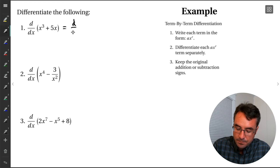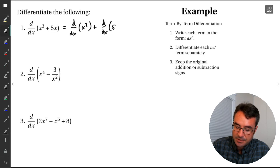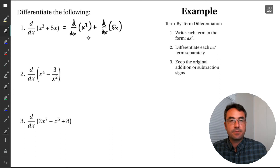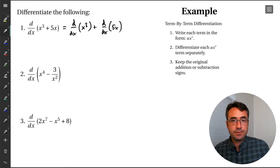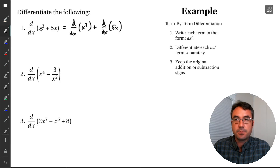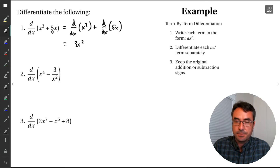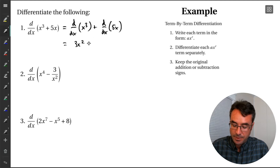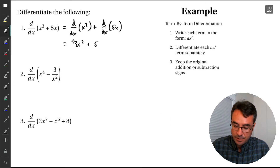For example, differentiate x cubed plus 5x. The sum rule says this derivative equals the derivative of x cubed plus the derivative of 5x. We don't normally show this step explicitly. What we're doing in our head: we look at the first term x cubed and differentiate it to get 3x squared. Then we go to the second term 5x and differentiate to get 5. Because there was addition, we just add the results. So our derivative is 3x squared plus 5.